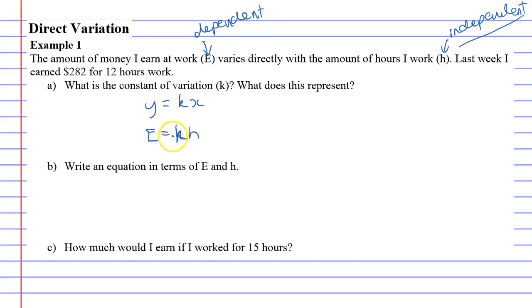We need to find K. K should always end up as a number, right? Now last week I earned $282, so $282 replaces the E. For 12 hours work, so the 12 will replace the H. We're going to have K times 12. We've just taken this formula, replaced the E with 282, and replaced the H with 12. We need to figure out K, and we can do that quite simply by just dividing 12 on both sides.